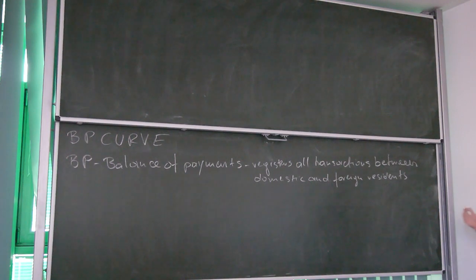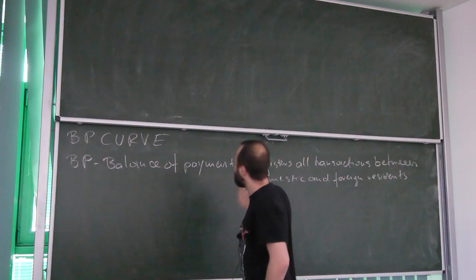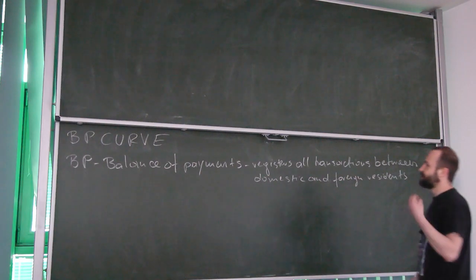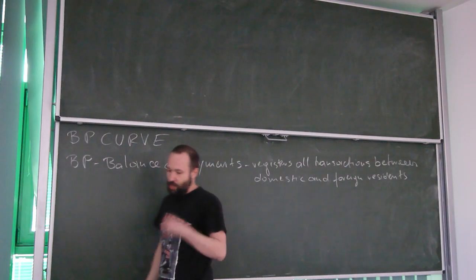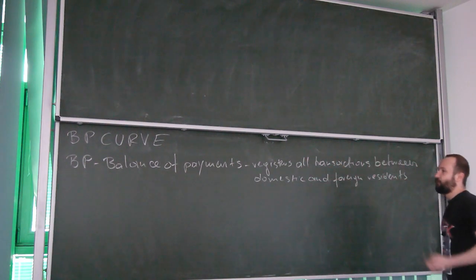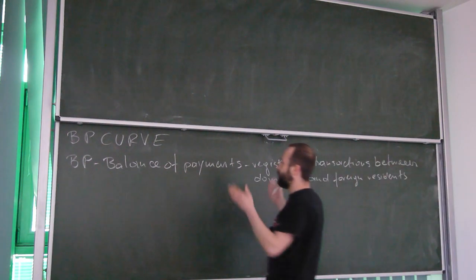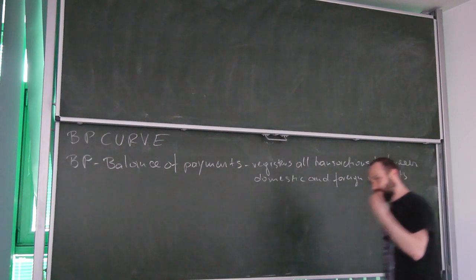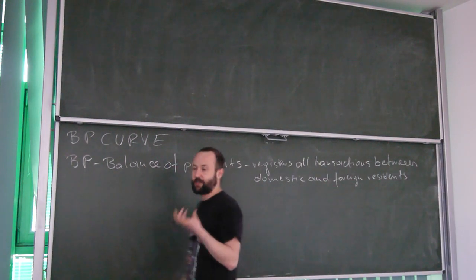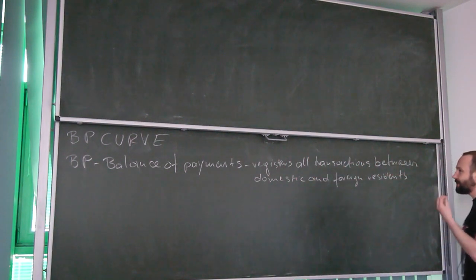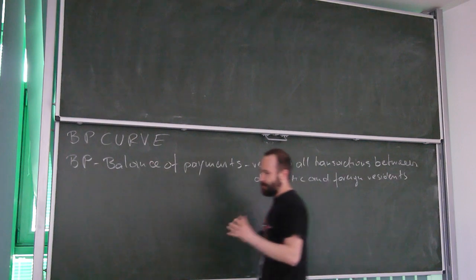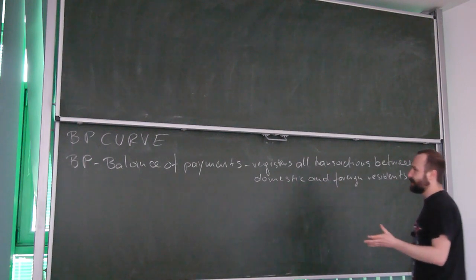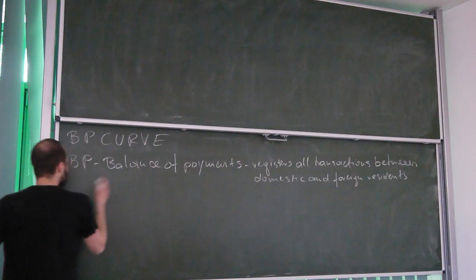Balance of Payments is like a balance you learned about in accounting class, but this time your unit is not a company — your unit is an entire country. Here we have the registration of all the transactions associated with one country and the rest of the world. International transactions involve different currencies, so we can see that the position of the Balance of Payments must be associated with the currency market. And yes, this is the case.